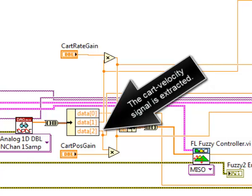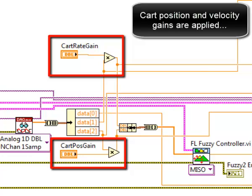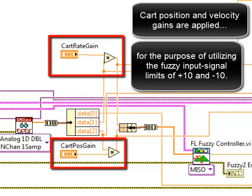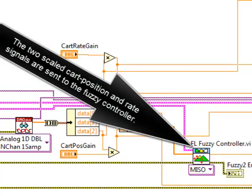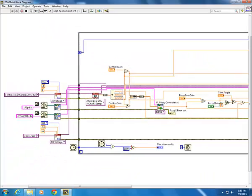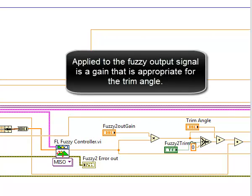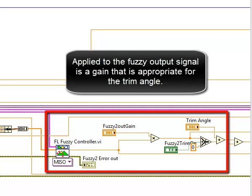Cart position and velocity gains are applied for the purpose of utilizing the fuzzy input signal limits of plus 10 and negative 10. Two scaled cart position and rate signals are sent to the fuzzy controller.